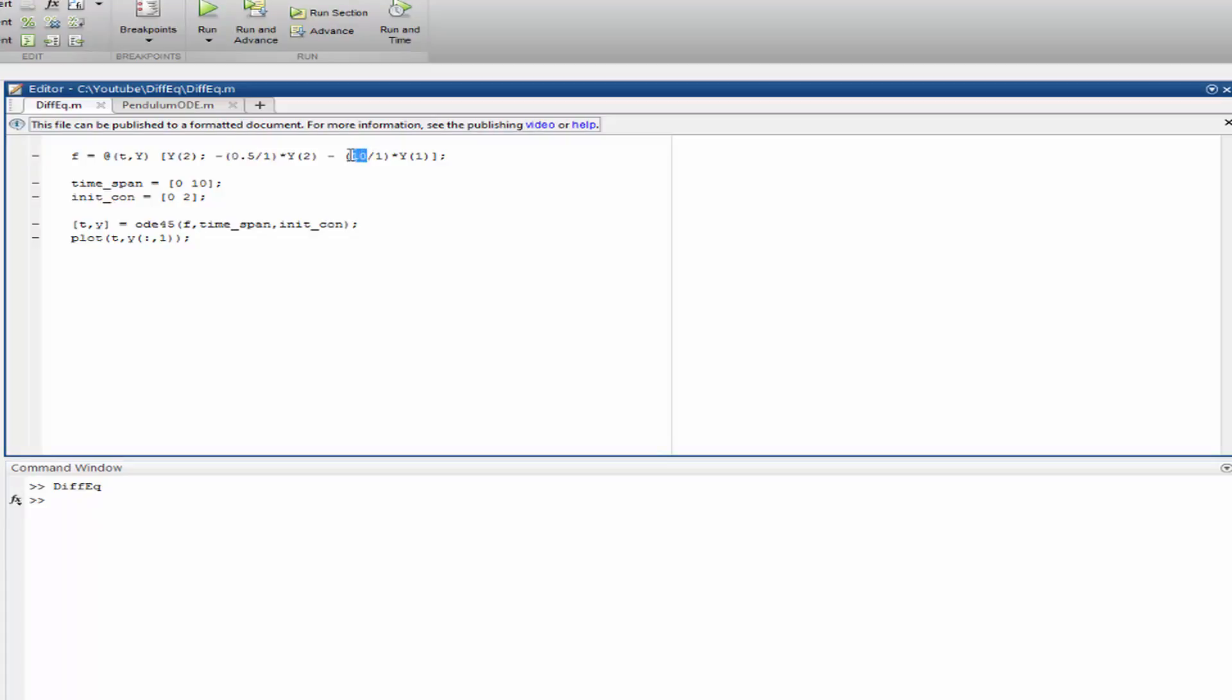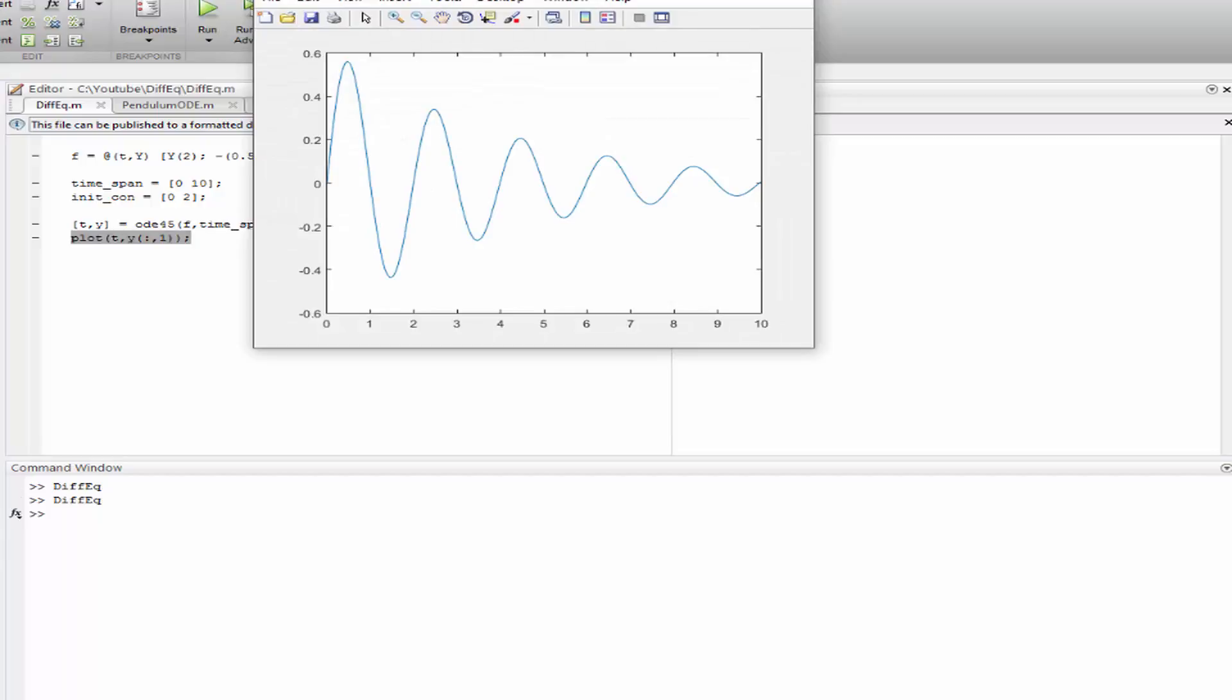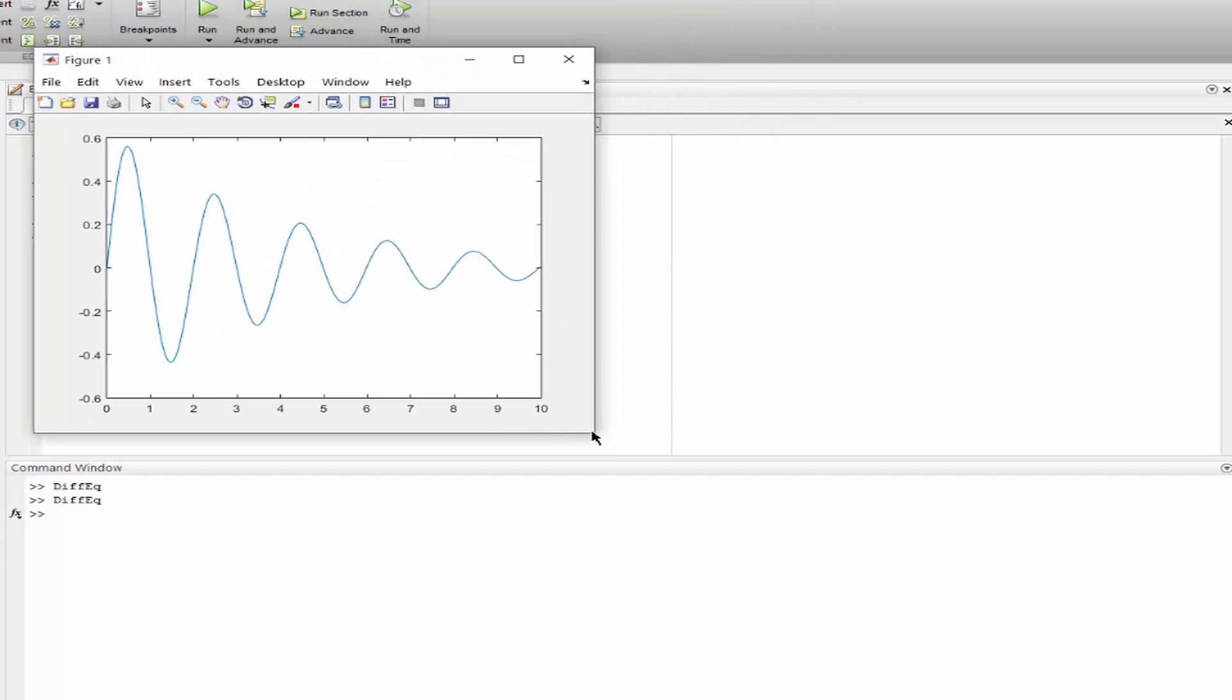See that the function F, the time span, initial conditions, I called c to be equal to 0.5 and k to be equal to 10 and the mass m 1. So let's call function ode45 and plot the results only for the position of the object. So that's it, very simple.